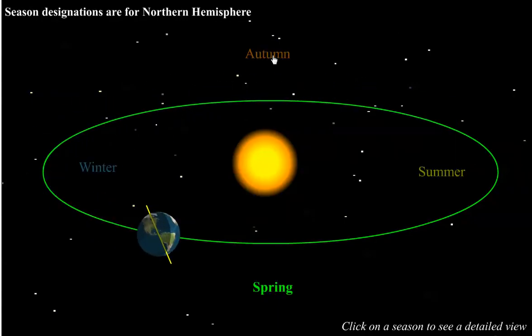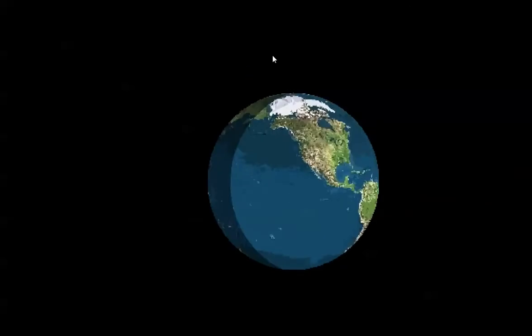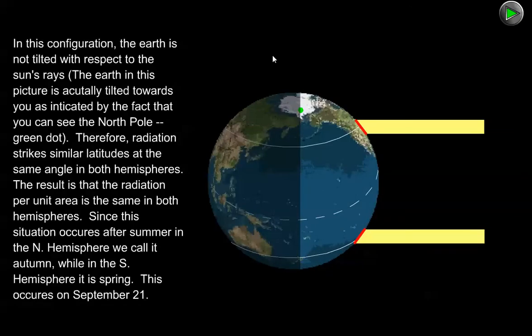Finally, in spring and fall, the tilt of the earth's axis isn't directed toward or away from the sun, so the sun's rays strike similar latitudes at the same angle in both hemispheres, which means the radiation per unit area is the same and temperatures end up being similar. Ultimately, this setup in spring and fall gives us an idea of what would happen if the earth was not tilted on its axis at all — we would not experience any seasonal variation as the earth revolves around the sun.